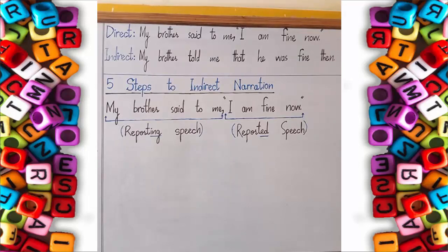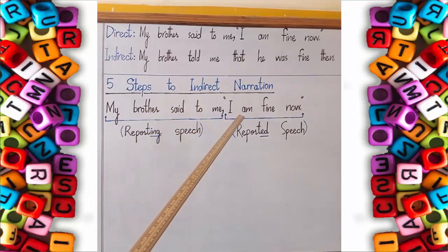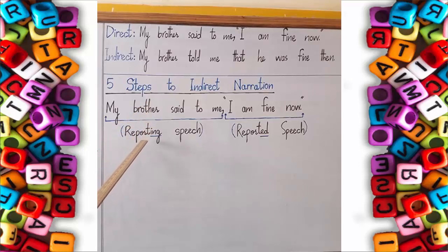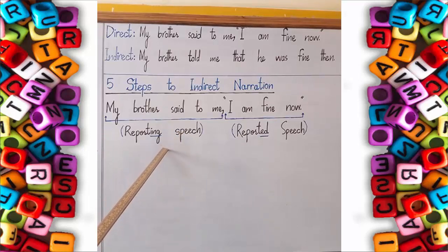Here you see five steps to indirect narration. Before explaining all five steps one by one, I will tell you that a direct narration sentence has two parts. The first part — 'My brother said to me' — is called reporting speech. I have underlined this reporting speech. The second part, inside the inverted commas, is called reported speech. So the first part of a direct sentence, which is outside the commas, is called reporting speech, and the part inside the commas is called reported speech.